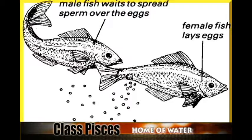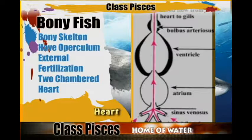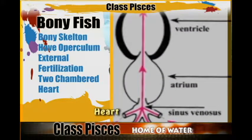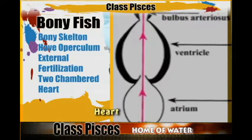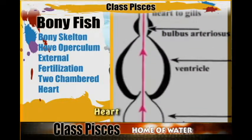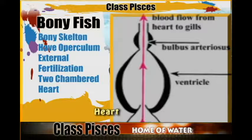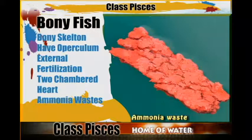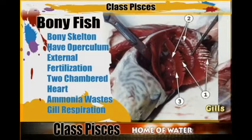The Osteichthyes have a two-chambered heart, whereas other animals have four-chambered hearts. Their nitrogenous waste is in the form of ammonia — they release ammonia because they are in plenty of water, and the release of ammonia requires a lot of water. They breathe through the gills.